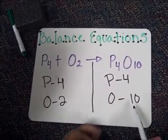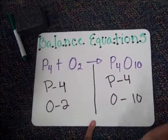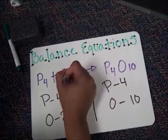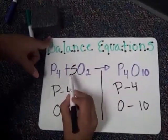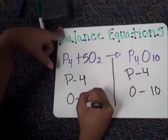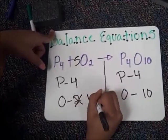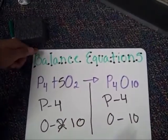So in order to get this one the same as this one, you would just put a 5 in front of this O2. So it has 5 oxygens, but 5 times 2 is 10. So you cross that out, and it becomes 10. And now the equation is balanced. Thank you.